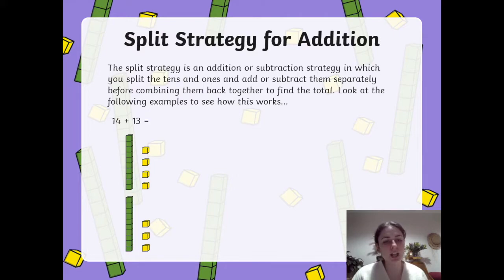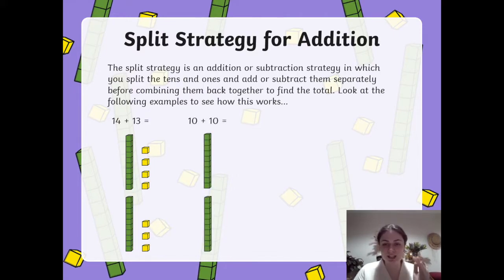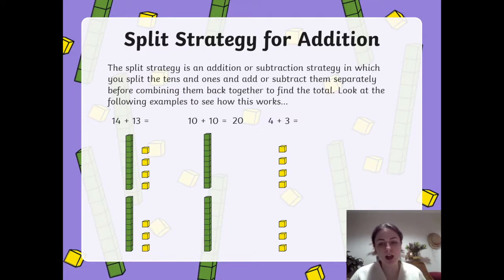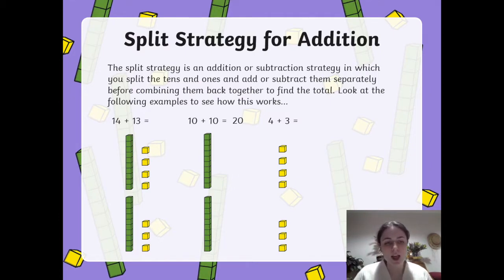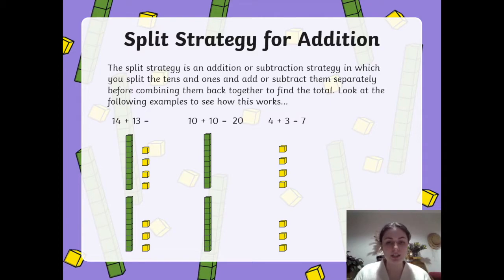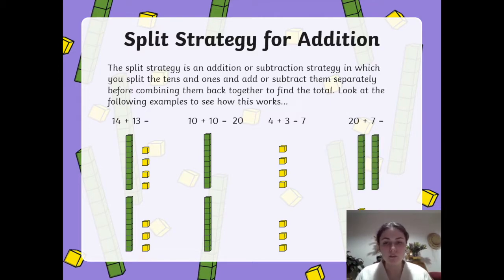So we've got 14 plus 13. We split them into the tens — as you can see we've got two tens lines and that equals 20 — and then we've split our ones, so we've got four ones and three ones. From our 14 we've taken our four ones and popped it there, and from 13 we've taken our three ones and popped it there. Now we can add the numbers we got, so 20 and 7 separately, and that gives us our answer of 27.